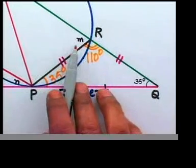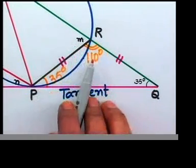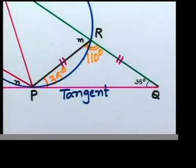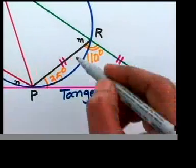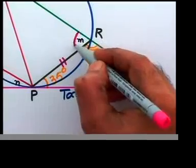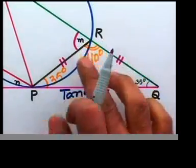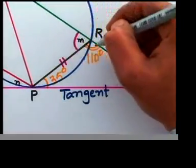Now can we find m? We know this is 110. Is there a way I can find angle m, that small part there, that angle I'm looking at? The green line—watch the green line, it's a straight line.